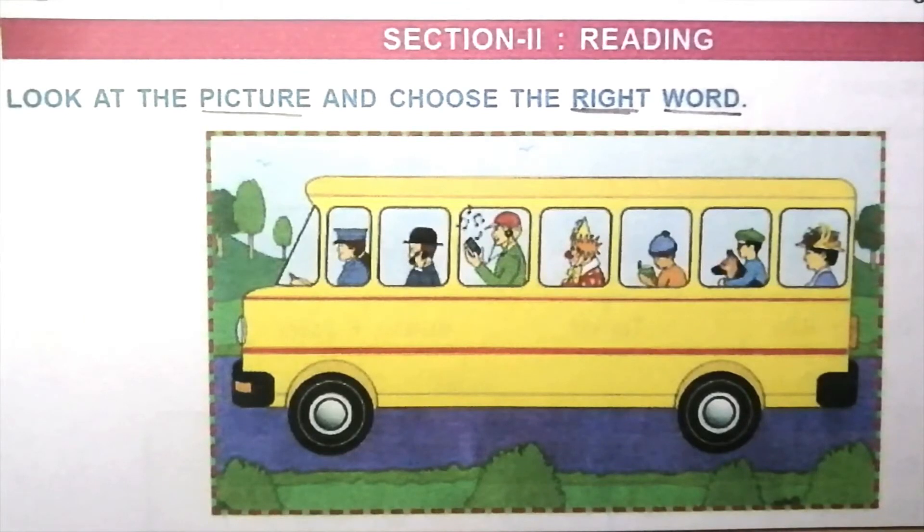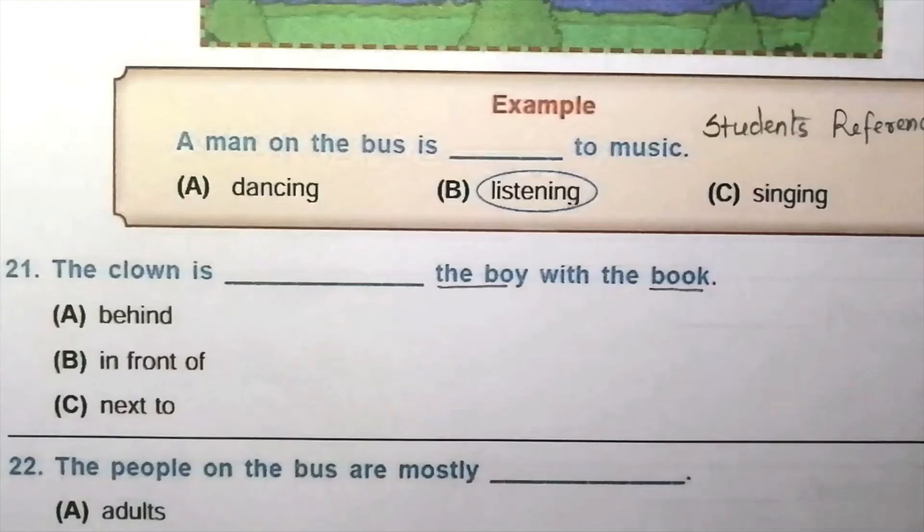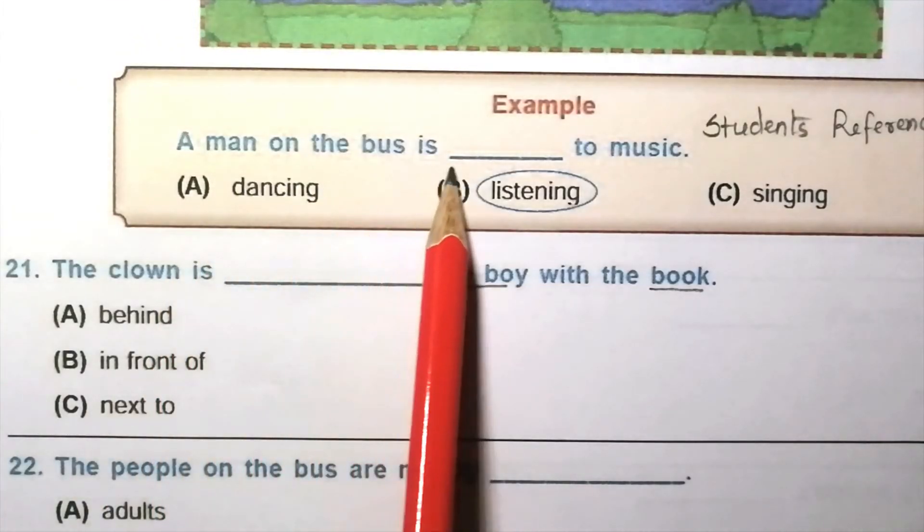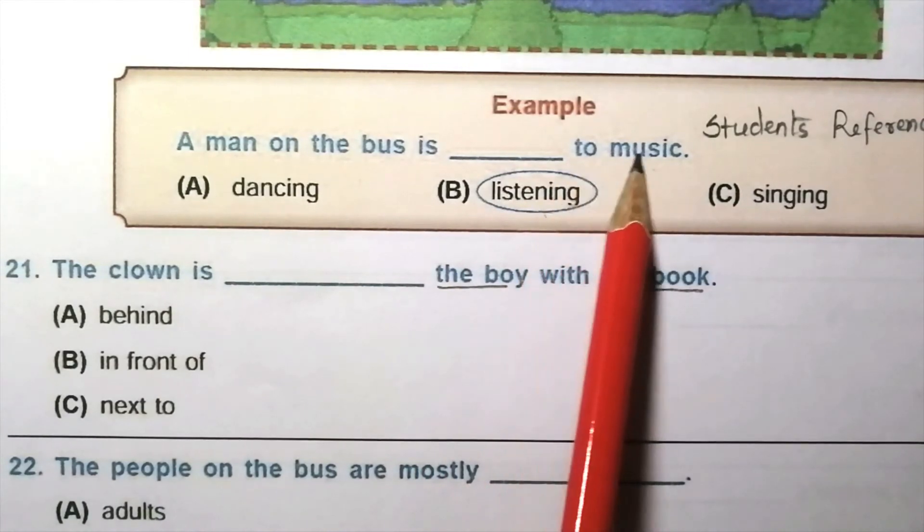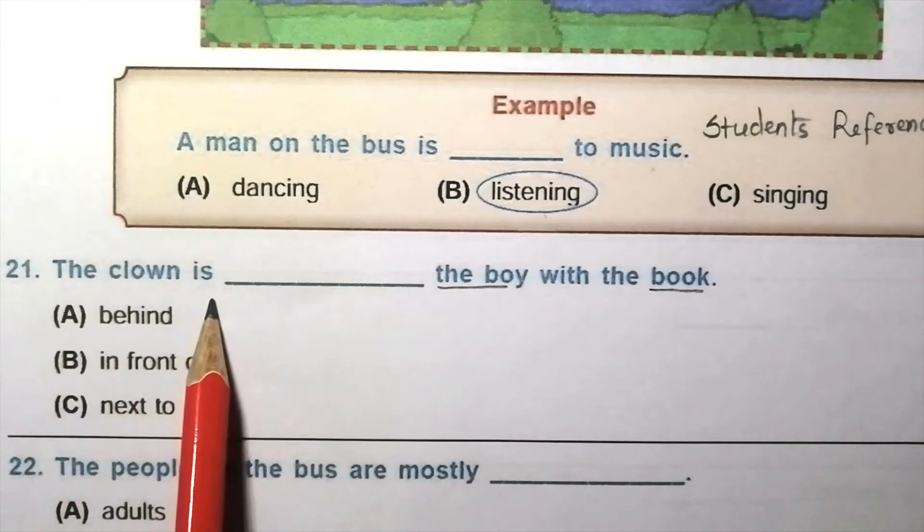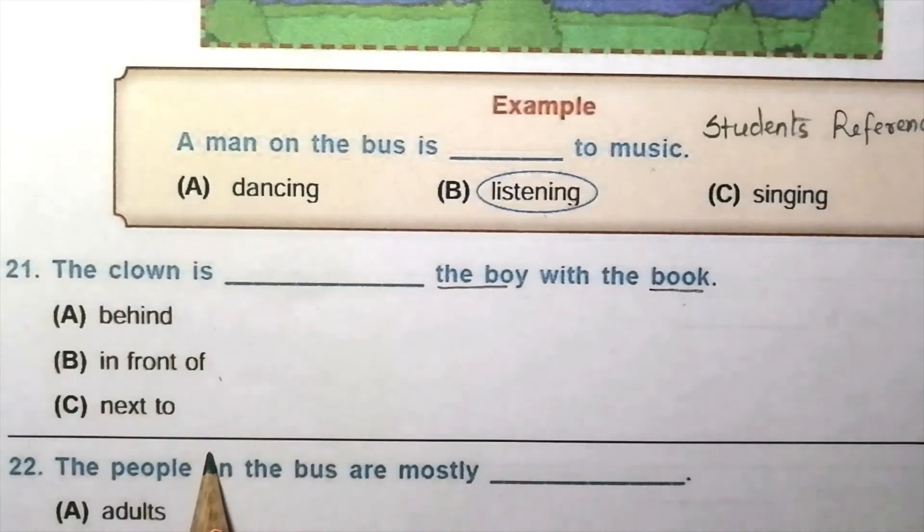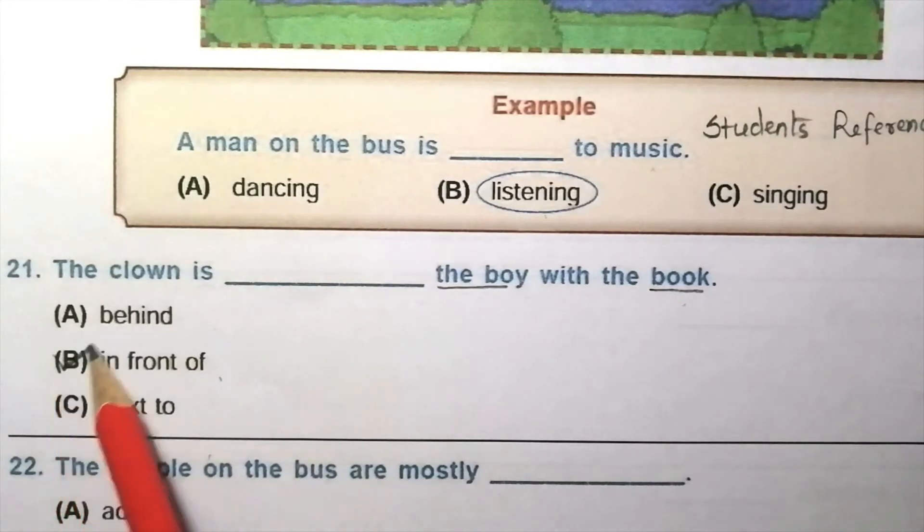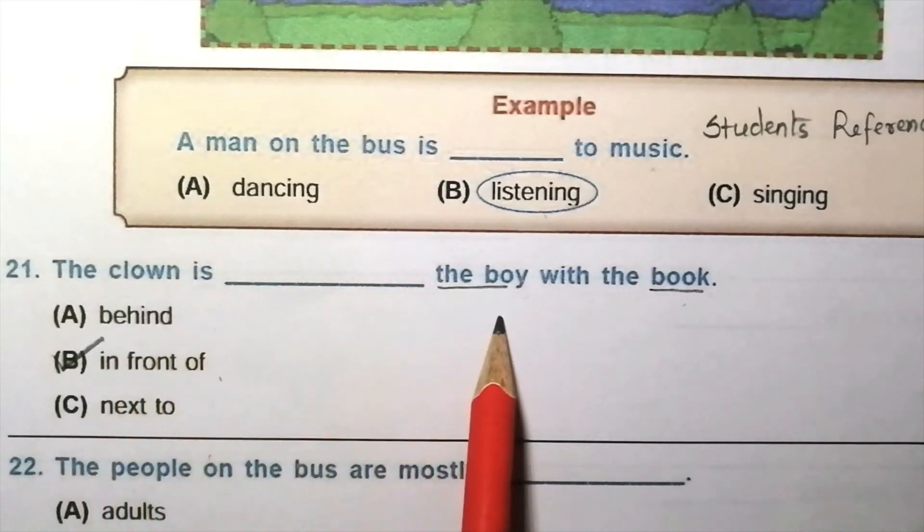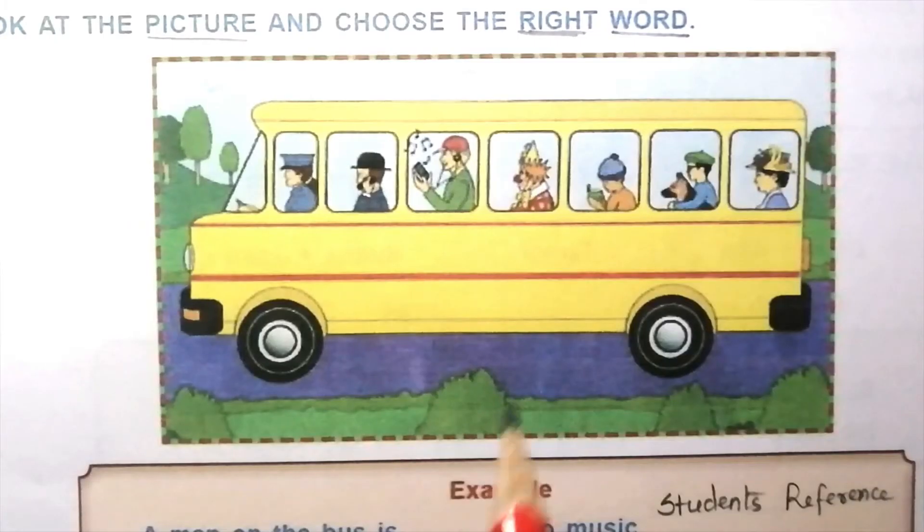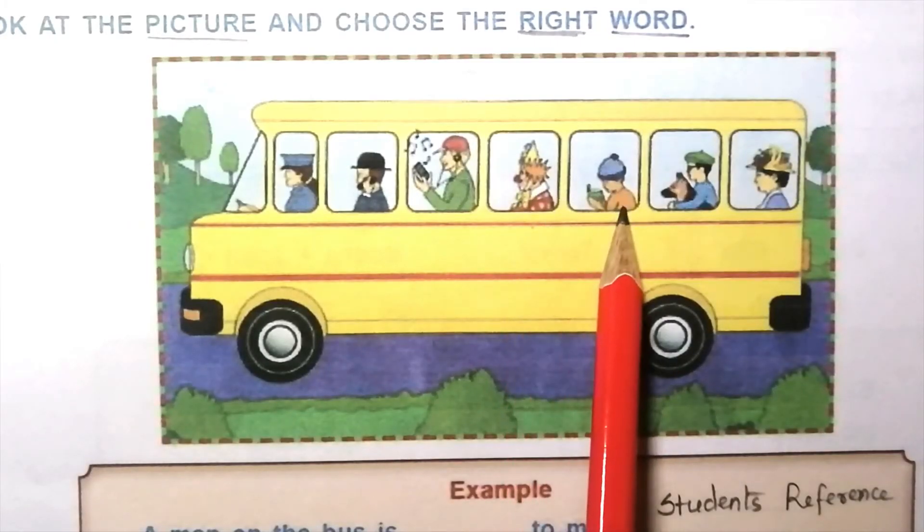Section 2, Reading. Look at the picture and choose the right word. Look at the given picture carefully. Example: A man on the bus is listening to music. Question 21: The clown is blank the boy with a book. Behind, in front of, next to. The clown is in front of the boy with a book.